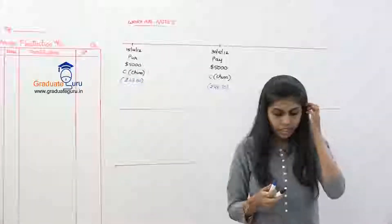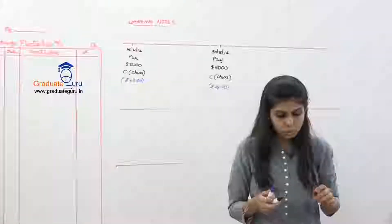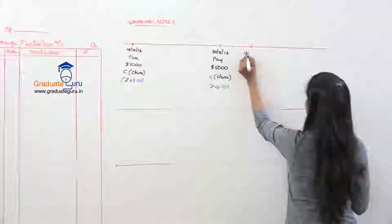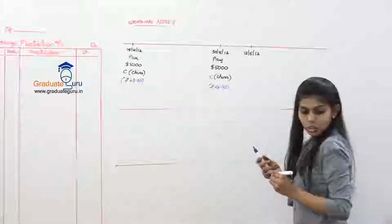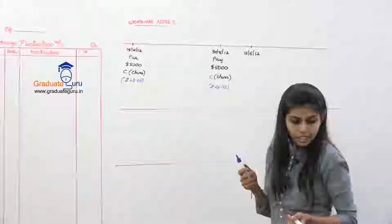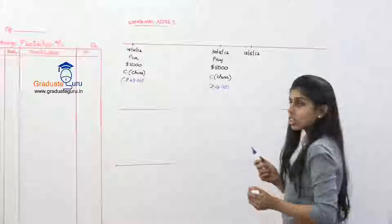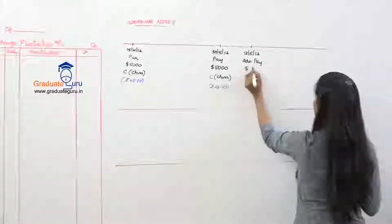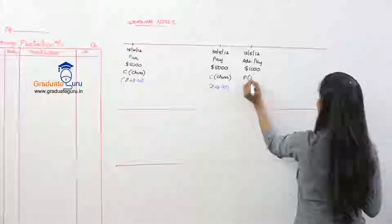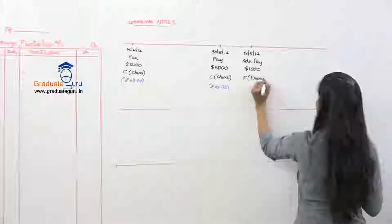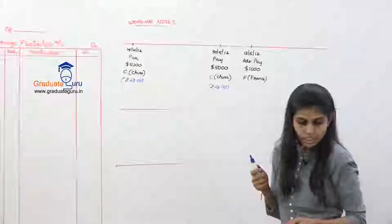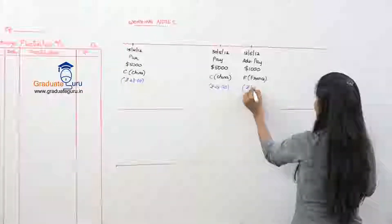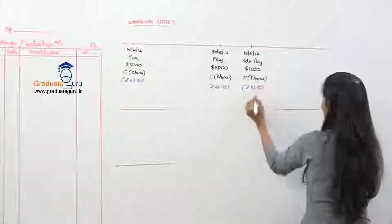On 12th June 2012, an advance amount of 1000 dollars was paid to F of France. So we place 12th June 2012 on the timeline - advance payment of 1000 dollars to F of France. The rate of exchange on that day is rupees 48.50.